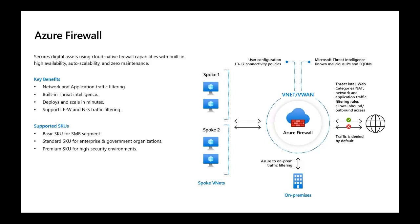Currently we have three SKUs or versions. We have the Basic SKU, which is geared toward the small business enterprise segment. We have the Standard SKU for enterprise and government organizations, and then the Premium SKU for high-security environments. These SKUs are tailored for different organizational verticals, each with their different features.